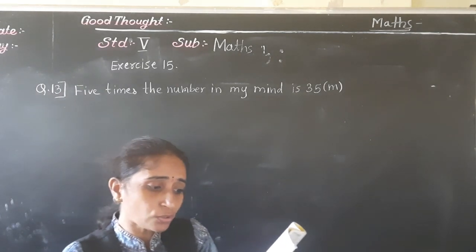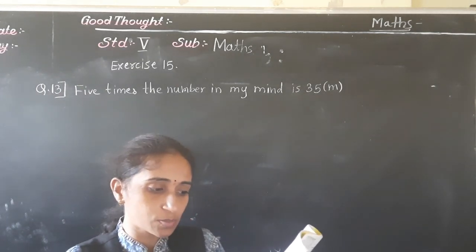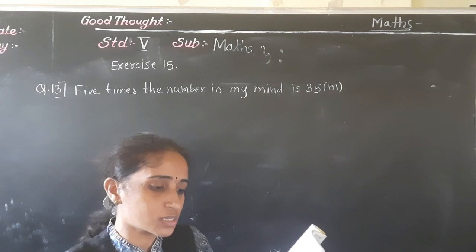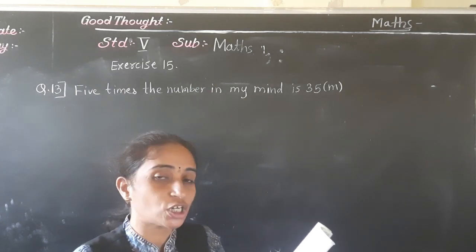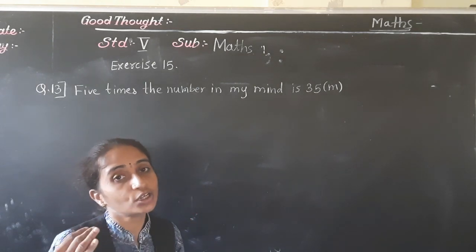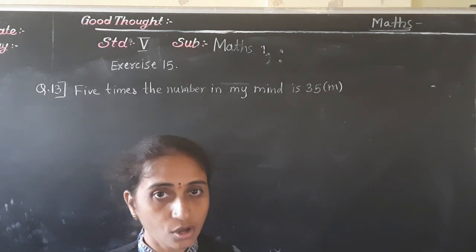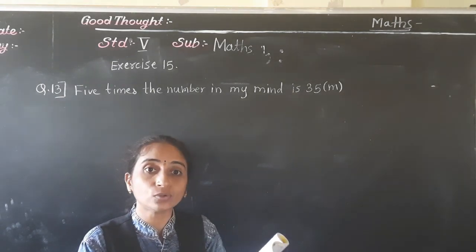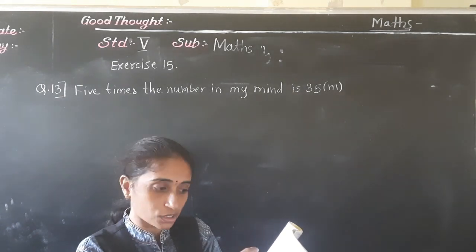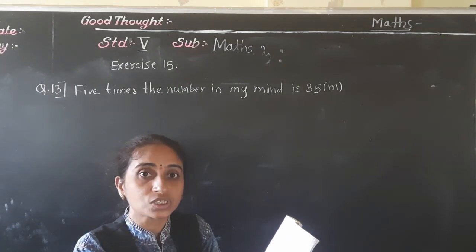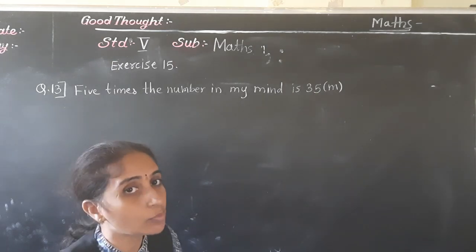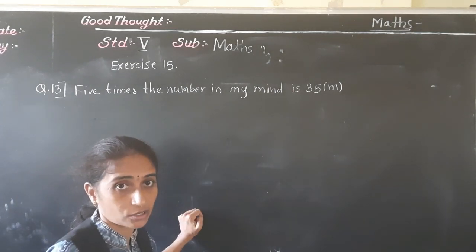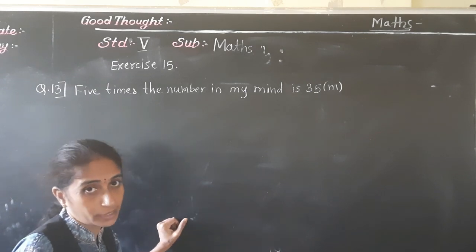Now from 17 to 20, see what is given in the textbook: solve the equation obtained in 13 to 16 and find the value of the letter. So in 13 to 16 we just form the equation, and for 17 to 20 we use the same equations and solve them. So I will explain the value of the given variable while showing the equation.